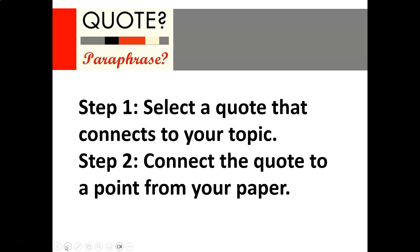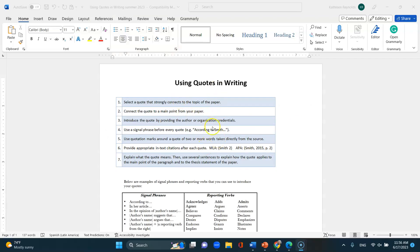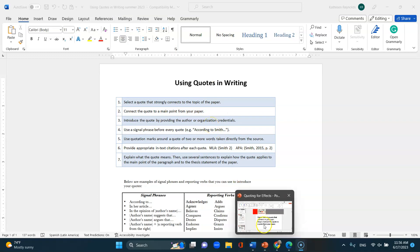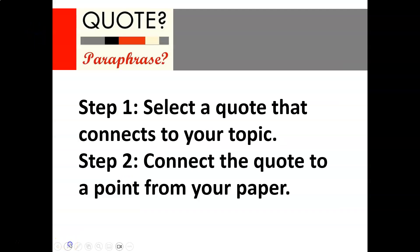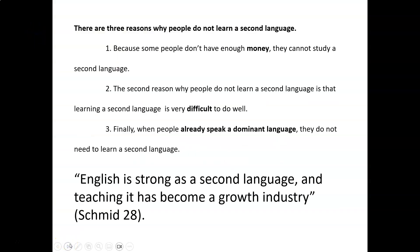When you look at the attached paper, you will see the steps to using a quote or paraphrase in your writing. Step one is to select a quote that connects to your topic, and step two is to connect the quote to a point from your paper. This section provides a summary of those first two steps.